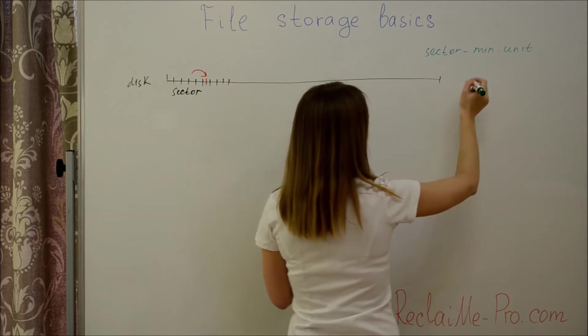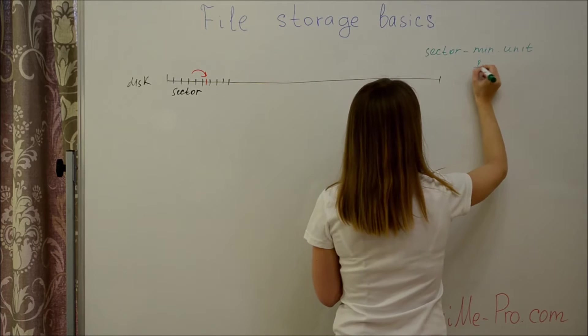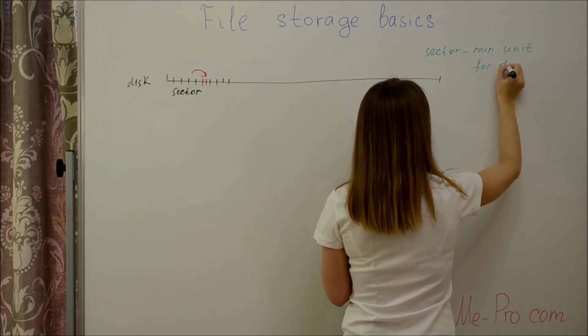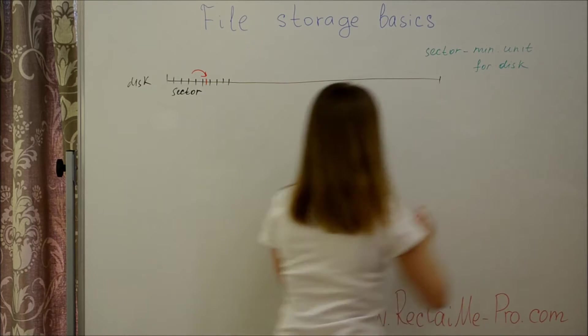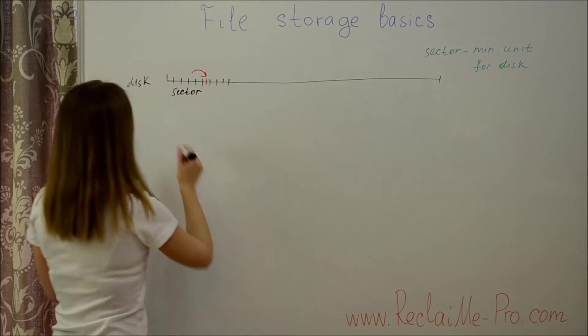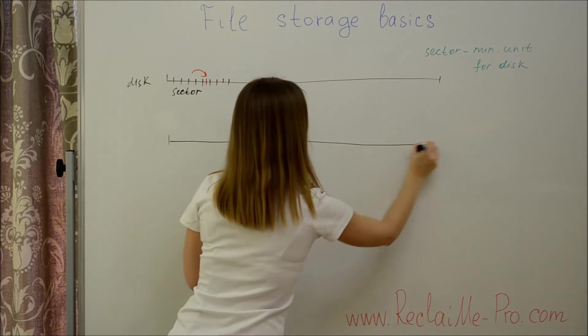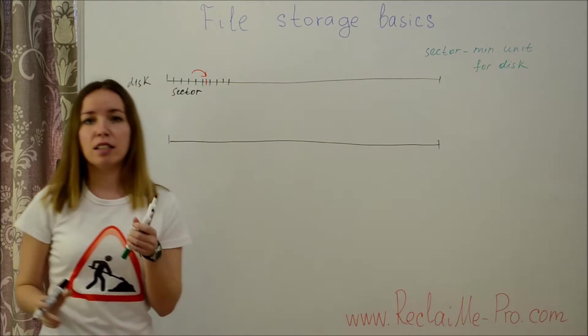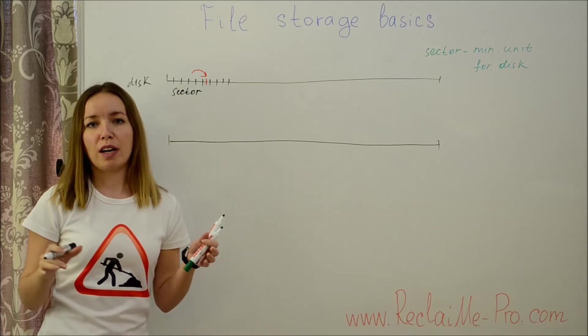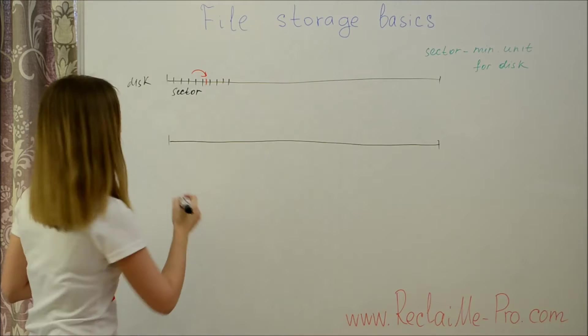A physical device operates with sectors. A file system, in turn, does not allocate disk space up to the byte and operates with sectors too.